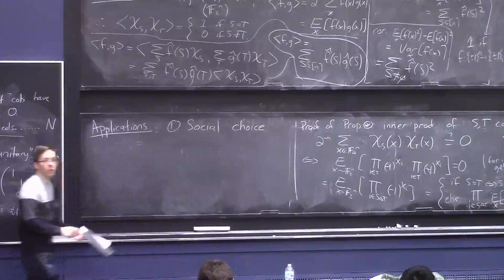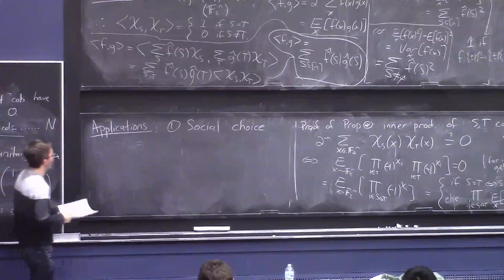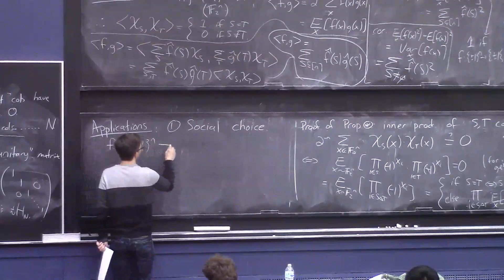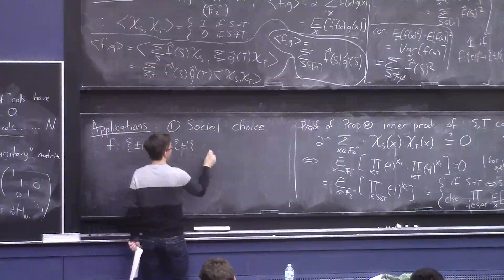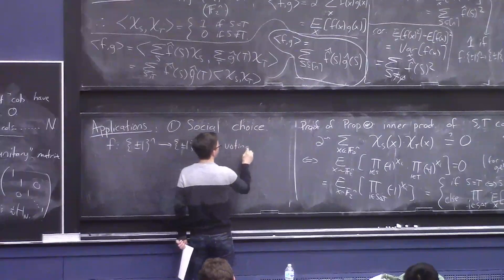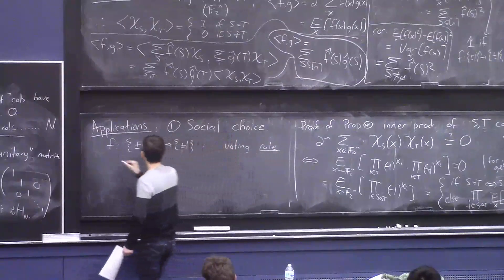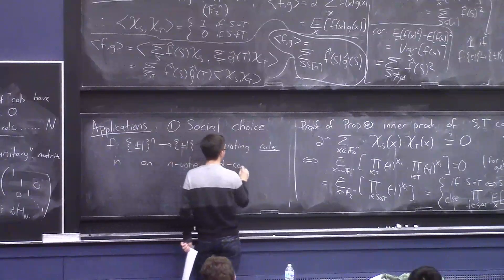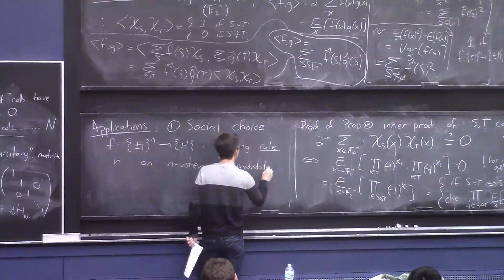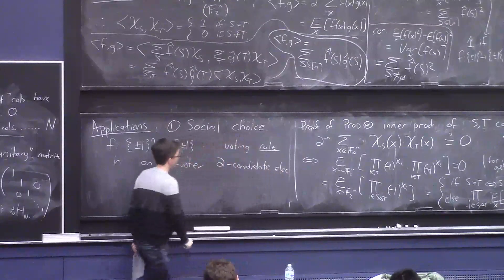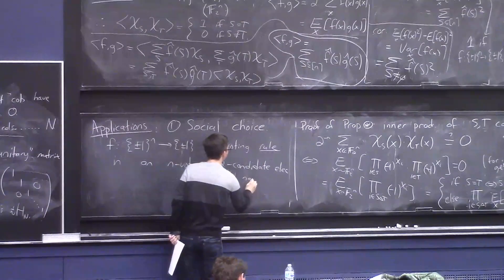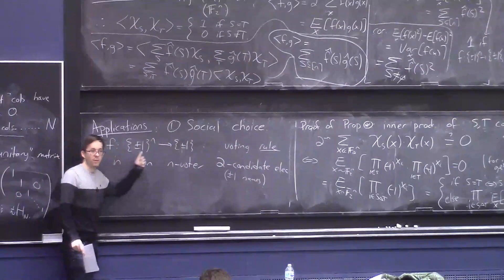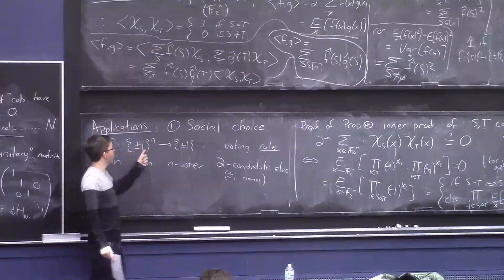So how do Boolean functions have anything to do with social choice? Boolean functions can be a model for an election rule. A Boolean function mapping n plus or minus 1 values to a plus or minus 1 value can be thought of as a voting rule in an n-voter two-candidate election. The two candidates are named plus or minus 1, and F tells you, given the votes, who the winner is.